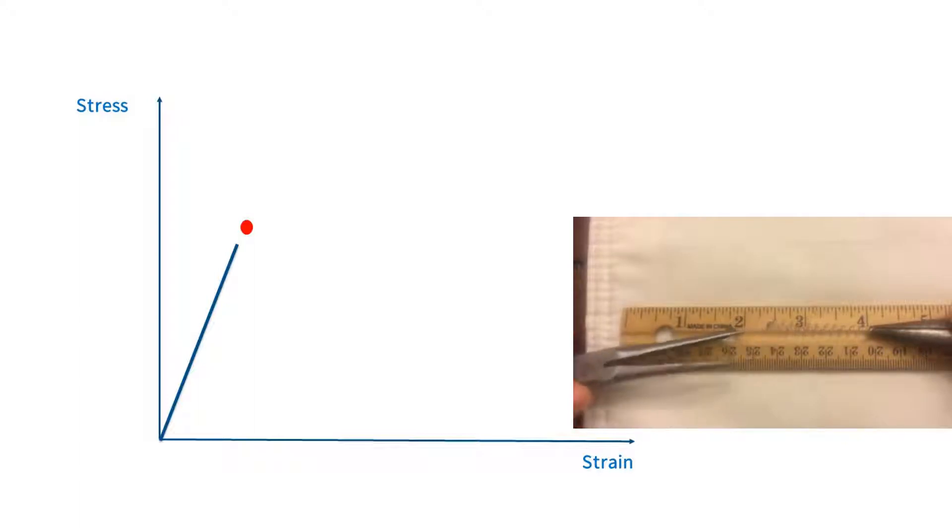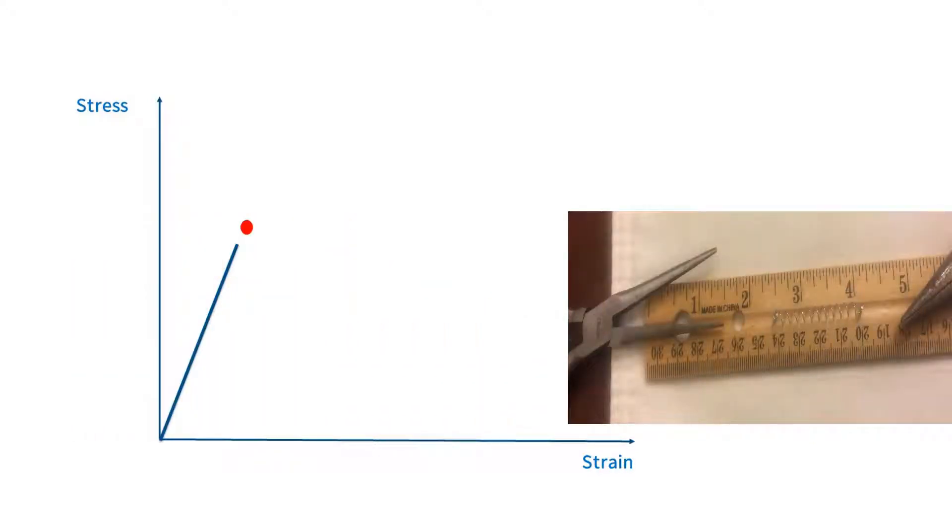If we pull on the spring too much, it does not return to its original shape. This is due to the fact that at a certain level of stress, the relationship between stress and strain stops being linear. We call the point where this happens the yield point.